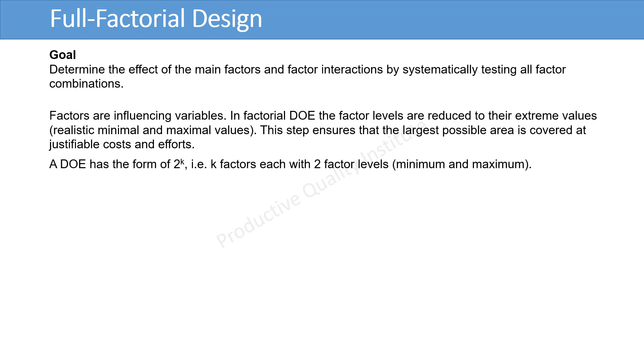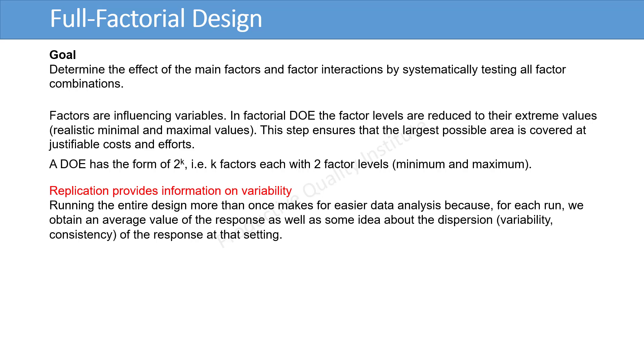DOE has the form of 2 to the power k, that is k factors, each with 2 factor levels, minimum and maximum. Replication provides information on variability. Running entire design more than once makes for easier data analysis, because for each run we obtain an average value of the response as well as some idea about the dispersion, variability, consistency of the response at that setting.